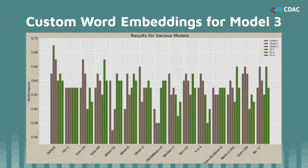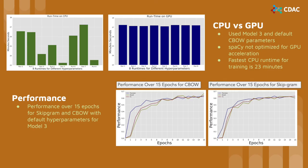Here are the results for our third model with custom tokenization and custom word embeddings. We changed various hyperparameters while training our word embeddings and found that the default CBOW word embeddings gave us the highest F1 score of about 0.67. We also evaluated model 3 based on general runtime on the CPU, GPU, and performance over 15 epochs with CBOW training and skipgram training. We found that spaCy is not optimized for GPU acceleration, and CBOW with default parameters outperforms skipgram.